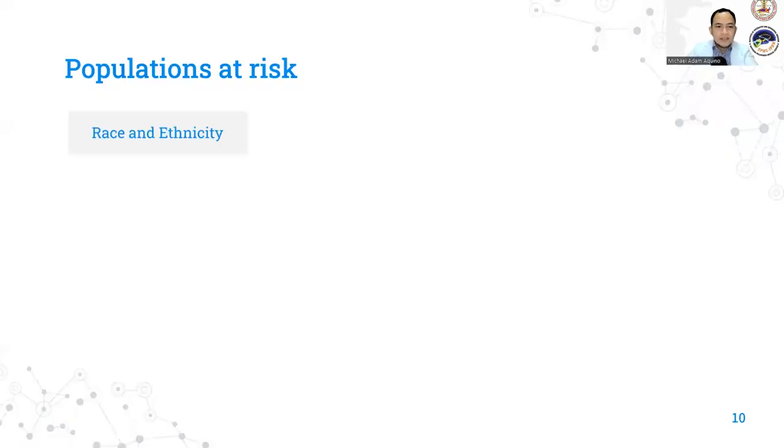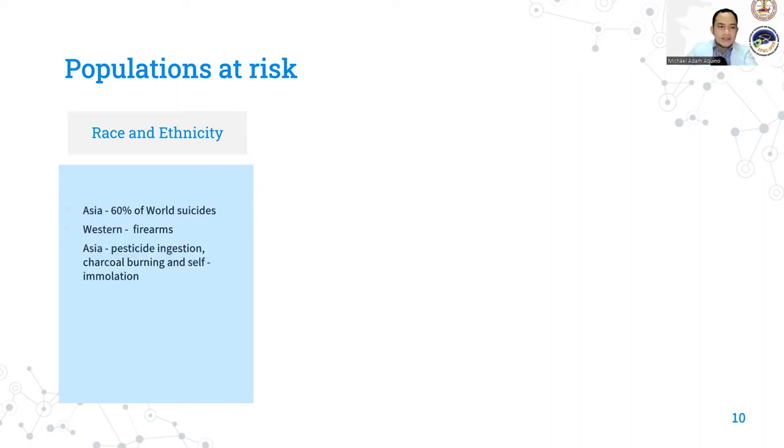For the populations at risk, or among the race and ethnicity, in Asia, it has the highest rate of suicides among the world, about 60%. In the Western world, because they have more access to firearms, most suicides are committed by gunshots. In Asia, suicides are most often committed by pesticide ingestion, charcoal burning, and self-immolation, or setting oneself on fire. Caucasian males have a higher rate of suicide in later life. Asian females have a higher rate of suicide after the age of 80 years old.